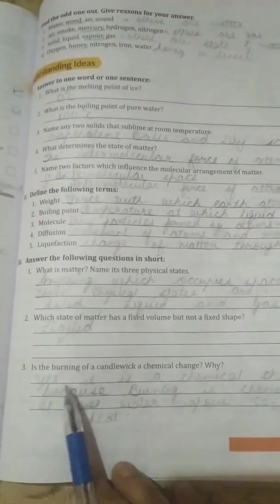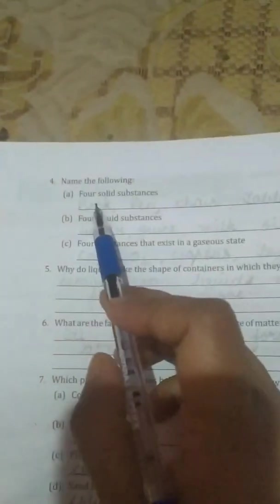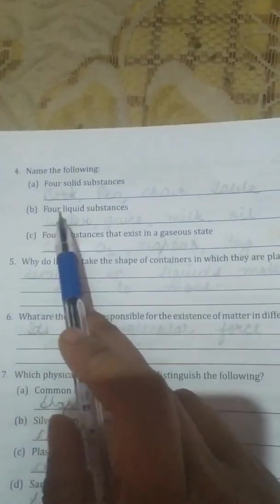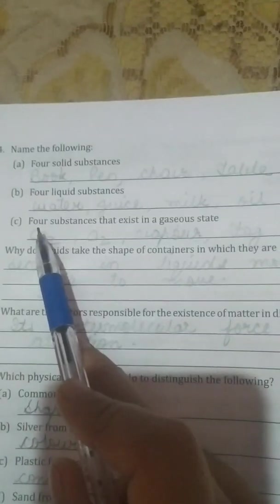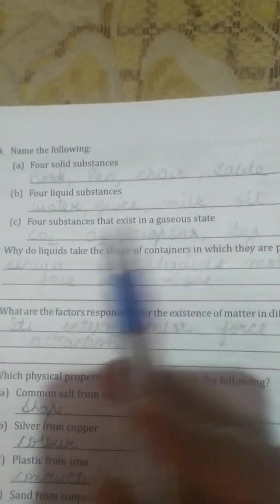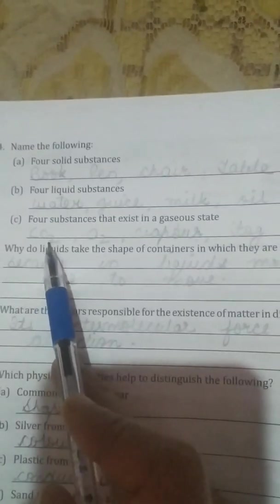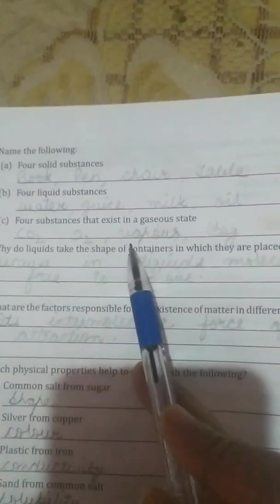It gives water vapors, carbon dioxide, and heat, and it also changes the chemicals also. Next is four solid substances. You can write any four substances. I have written book, pen, chair, and table. B part, four liquid substances, that is water, juice, milk, and oil. Third, four substances that exist in a gaseous state. So I have used the symbols, you can write the names also. Carbon dioxide, oxygen, vapor, and fog.